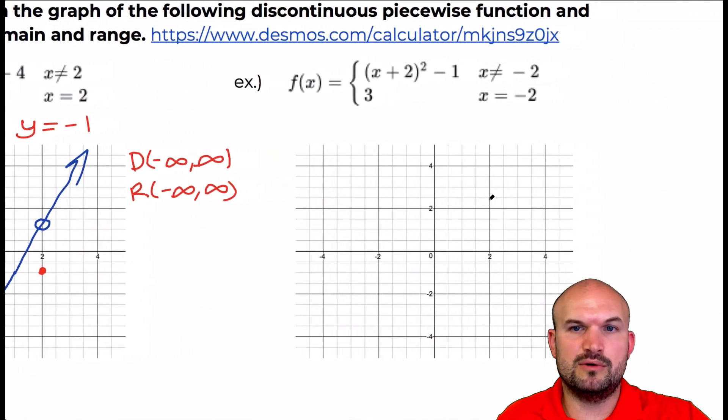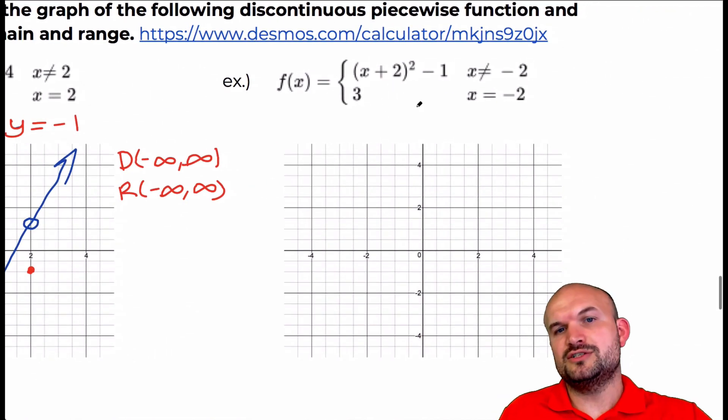Alright, and let's just go and take a look at one more example of this kind. So here we have a quadratic function. Again, it's going to produce a parabola and you can see by the transformations we're going to be shifted left to down one. And it's true for all values except for x cannot equal negative two. When x equals negative two I have a vertex at negative one. But the rest of the graph is all good.